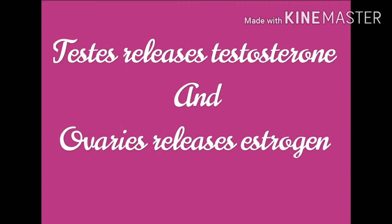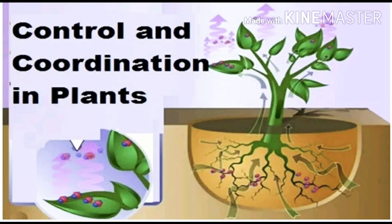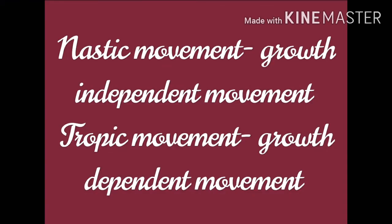Control and coordination in plants is not as complicated as in animals, but plants also show responses to environmental changes or stimuli such as light, gravity, water, and touch. Plants coordinate their responses against environmental stimuli by using hormones, so plants possess only chemical coordination. Plants show two types of movements: growth-independent movements and growth-dependent movements. Growth-independent movements are called nastic movements, and growth-dependent movements are called tropic movements.